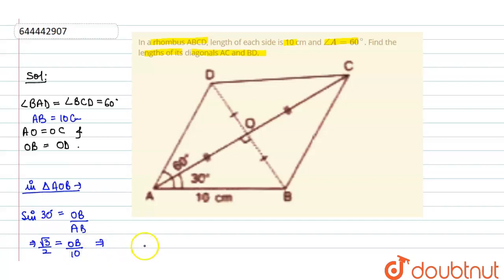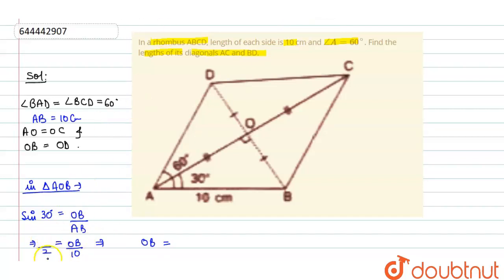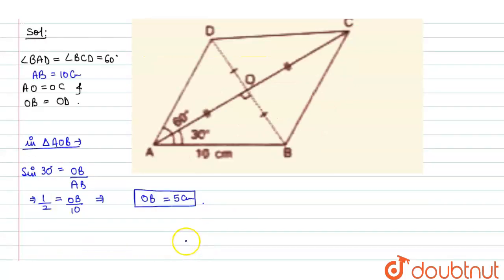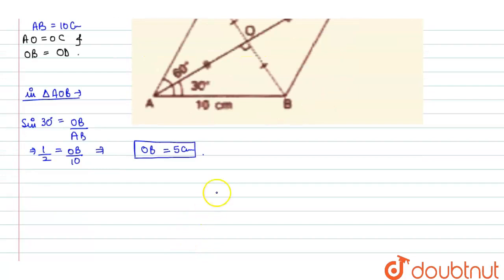So sine 30 degrees equals OB upon 10. The value of sine 30 degrees is 1/2 — not root 3 by 2, it's 1/2. So on cross multiplying: 2·OB = 10, therefore OB equals 5 centimeters.